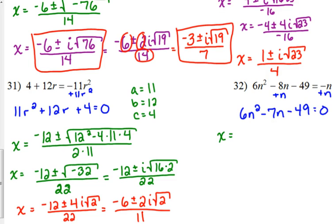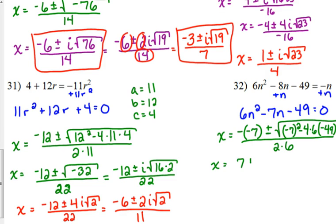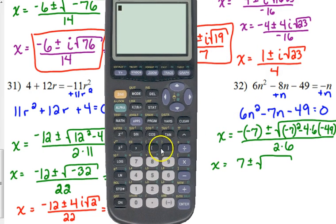So x is equal to negative b. Well, b was already negative, so it's going to become positive. Plus or minus the square root of b squared minus 4 times a times c all over 2 times a. It's obviously very important that you are careful with your signs. And it never hurts to just type everything in instead of trying to do it in your head.